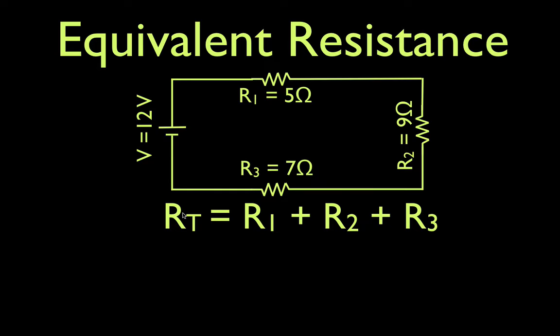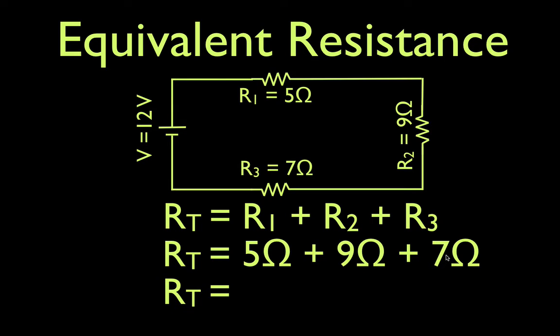If we do that for this circuit, we get RT, the total resistance, equals the first resistor, 5 ohms, plus the second resistor, 9 ohms, plus the third resistor, 7 ohms. If I did that correctly on my calculator, the total resistance of those three resistors in series is 21 ohms.